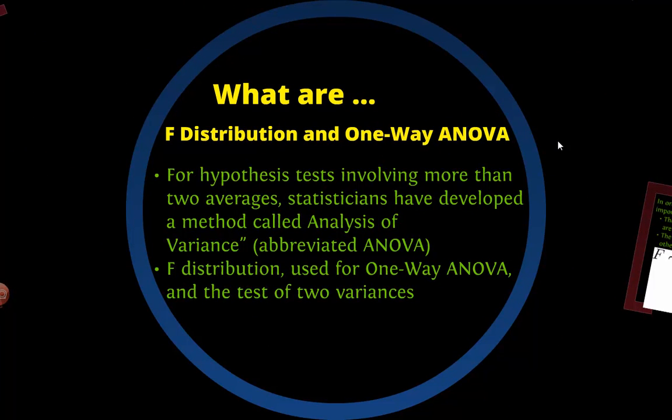An ANOVA table allows you to, remember in chapter 11 we did two hypotheses, we had two means or two populations and we were comparing them. This allows us to test whether more than two averages are the same. So we want to test multiple groups and see if everything is the same for them. To do this we have to do an analysis of variance which they abbreviate down to ANOVA, and the F distribution is the ratio that is calculated to test an ANOVA table.